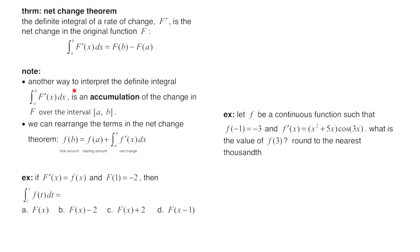Another way to interpret the definite integral from a to b of f prime of x dx: it's an accumulation of the change in f over that closed interval from a to b. You can also rearrange the terms in the net change theorem where you have the final amount f of b equals the starting amount f of a, plus the integral from a to b of f prime of x dx.